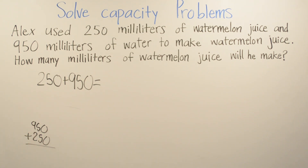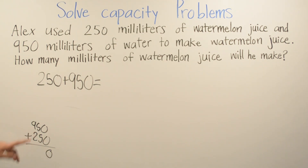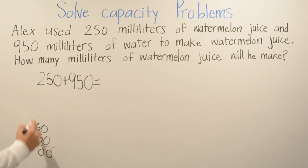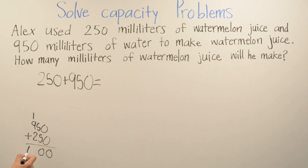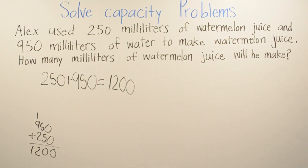0 plus 0 is 0. 5 plus 5 is 10. 9 plus 2 is 11, plus 1 is 12. So your final answer is going to be: Alex will make 1,200 milliliters of watermelon juice.